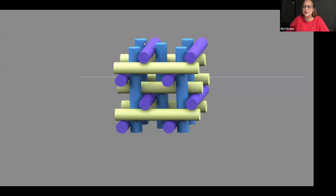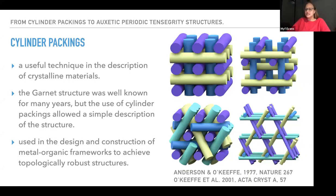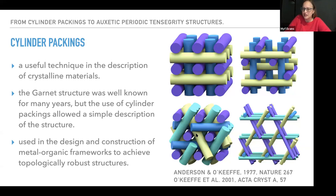I'm going to start by talking about cylinder packings. This is an extension of sphere packings — looking at how you can pack infinite cylinders in space. So infinite straight cylinders in a periodic setting. The simplest way to pack cylinders would just be parallel cylinders in space, and their cross section would just be circle packing, so 2D circle packings.